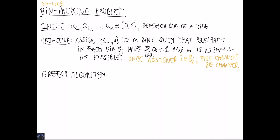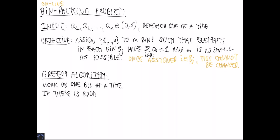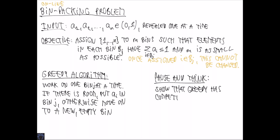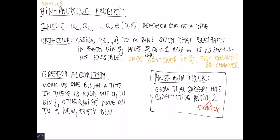An obvious approach is the greedy algorithm. It always works on one bin at a time: if there is room in the current bin for the next item, we put it there; otherwise, we seal off that bin and move on to a new empty bin. The greedy algorithm has a competitive ratio of exactly 2 — this is both an upper and a lower bound.